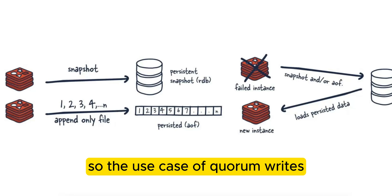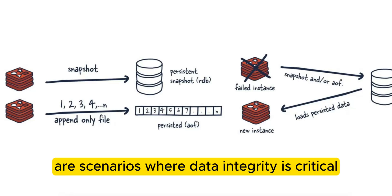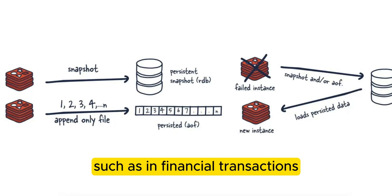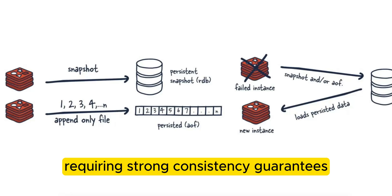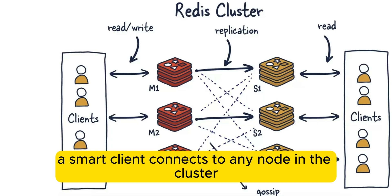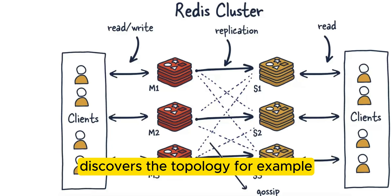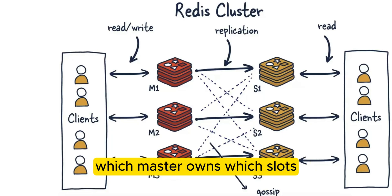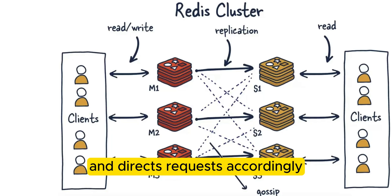The use case for quorum writes covers scenarios where data integrity is critical, such as financial transactions or applications requiring strong consistency guarantees. Redis cluster expects clients to be aware of the cluster topology. A smart client connects to any node in the cluster, discovers the topology — for example, which master owns which slots — and directs requests accordingly to avoid unnecessary redirections.